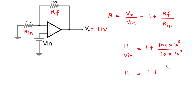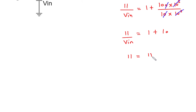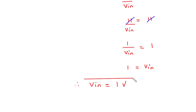After cancellation, we get 11 divided by Vin equals 1 plus 10, which equals 11. Cancelling the 11 on both sides gives 1 divided by Vin equals 1, so Vin equals 1. Since this is a voltage, the unit is volts. Therefore, Vin equals 1 volt.